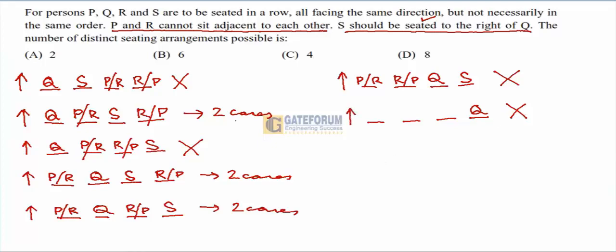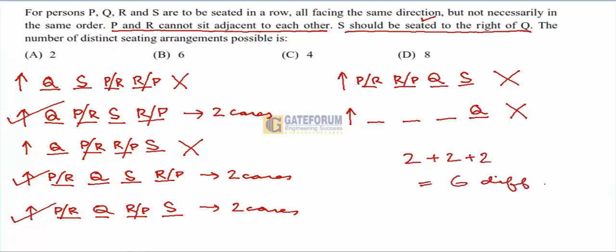Totalling up: 2 + 2 + 2 = 6 different arrangements can take place. The answer is 6.